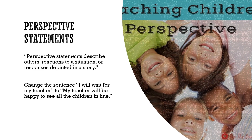The third type of sentences in a social story can contain perspective statements, which describe how others react in the given situation. For example, the directive statement 'I will wait for my teacher' written as a perspective sentence would become 'my teacher will be happy to see all the children in line.' Using perspective statements in this way tells the student how his or her teacher will respond to the new target behavior. Another example would be 'some children will want to keep playing,' or 'the children all said oh no when they heard the bell ring.'